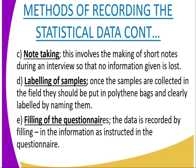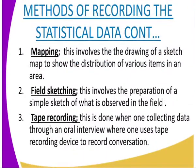Number five is the filling in of questionnaires. The data is recorded by filling in the information as instructed in the questionnaire. Then we have mapping — another method that we can apply. This involves the drawing of a sketch map to show the distribution of various items in an area. Then we have field sketching, which involves the preparation of a simple sketch of what is observed in the field.